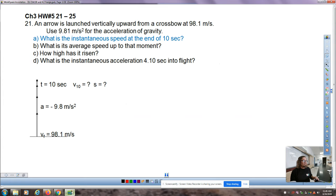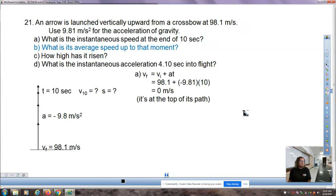In chapter 3 homework number 5, number 21 says an arrow is launched vertically upward from a crossbow at 98.1 meters per second. Using 9.81 meters per second squared as acceleration of gravity, what is the instantaneous speed at the end of 10 seconds? Some people can conceptually see the answer is that its speed is zero. If not, you can plug it into the equations, and you can see that it's at the top of its path.